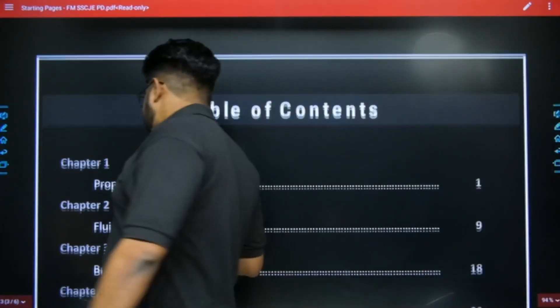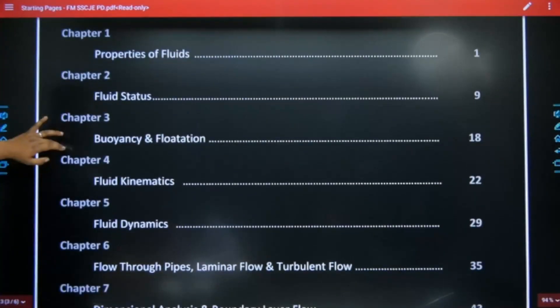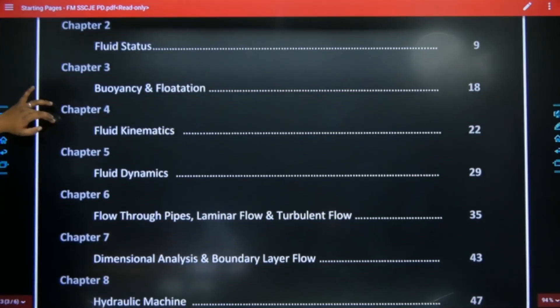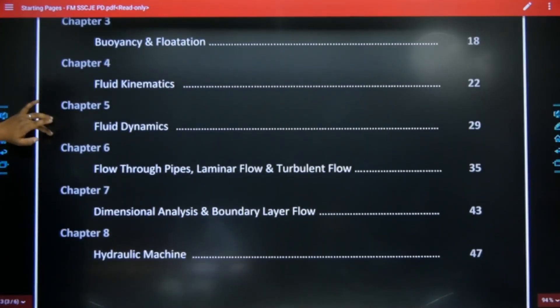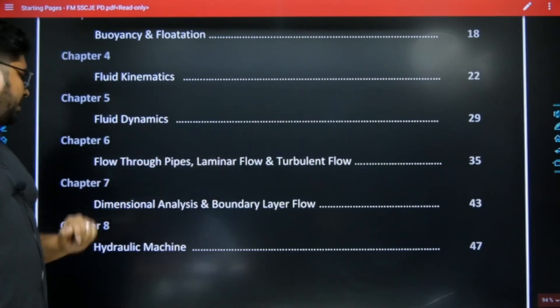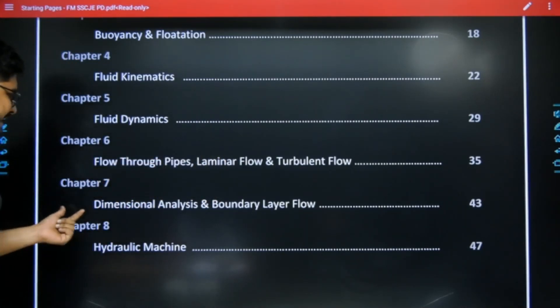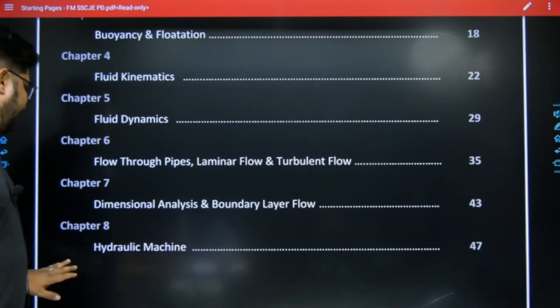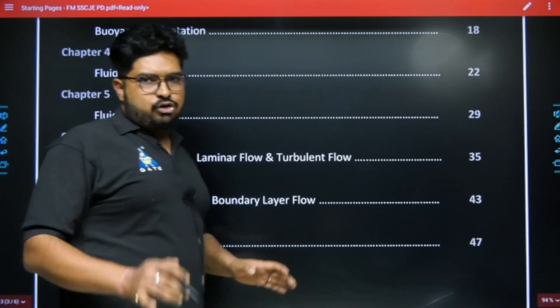First chapter is our properties of fluid, then fluid statics, buoyancy and flotation, fluid kinematics, fluid dynamics, flow through pipes, laminar flow and turbulent flow, then dimensional analysis and boundary layer flow. And last, you have hydraulic machines.